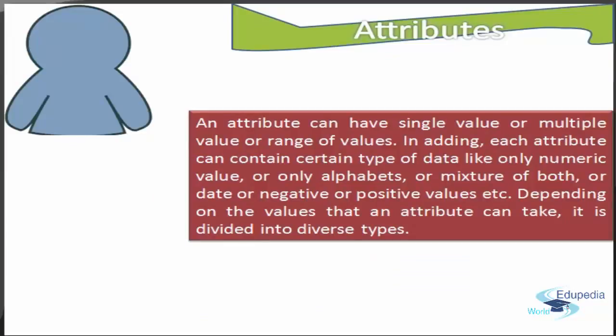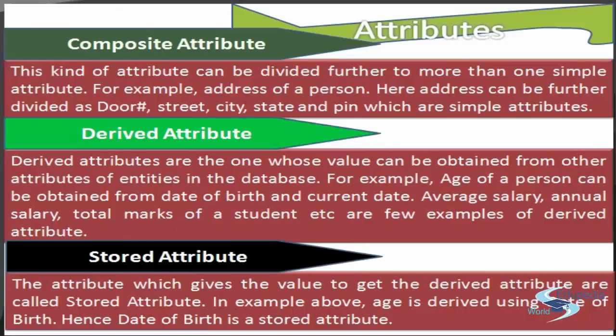Let us see attributes. An attribute can have a single value, multiple values, or a range of values. It can be positive or negative, and can contain digits, alphabets, or alphanumeric characters. Depending on the values that an attribute can take, it is divided into various types.